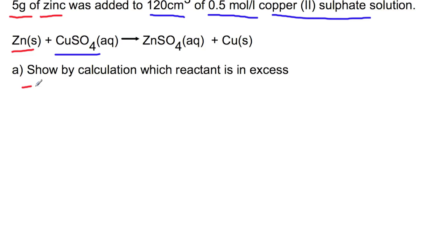So if we start by looking at zinc, we need to work out the moles. So we have a mass here, so we're going to do mass divided by gram formula mass. So we have 5 grams of zinc divided by 65.4, which gives us 0.076 moles.